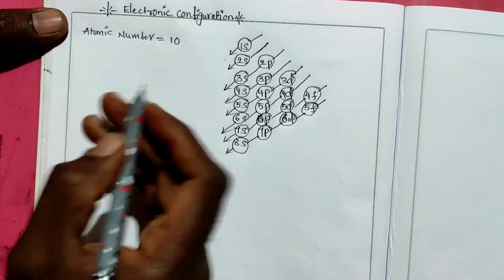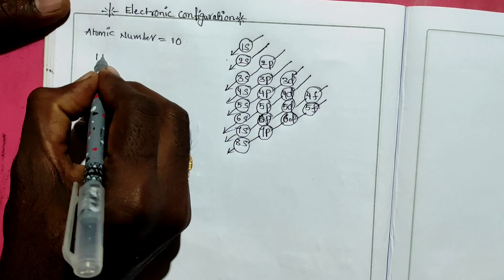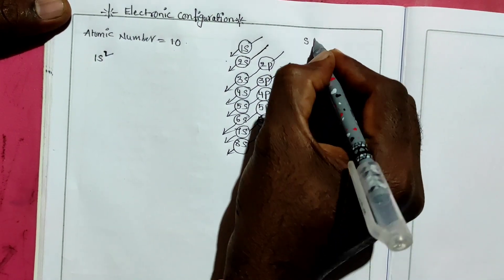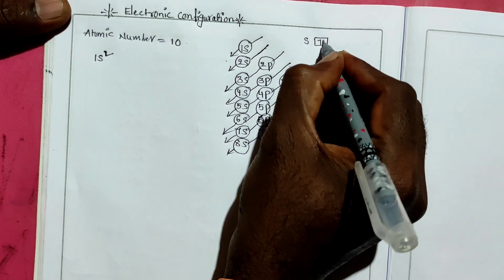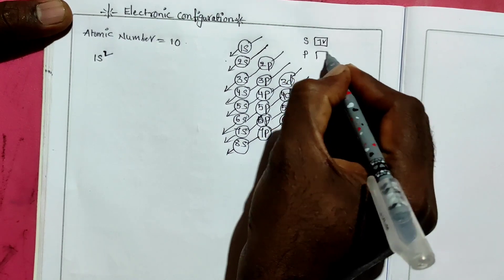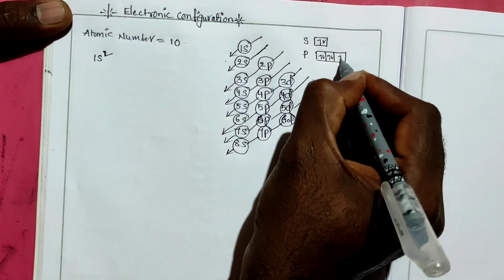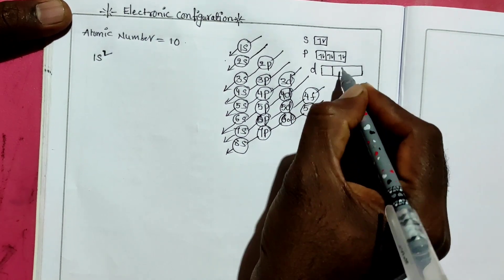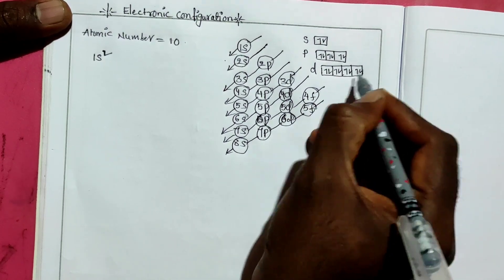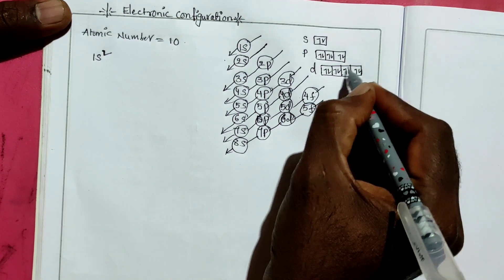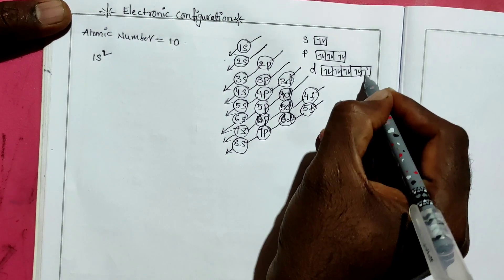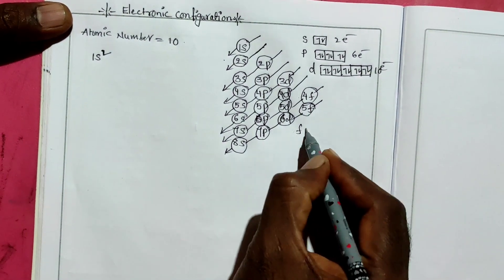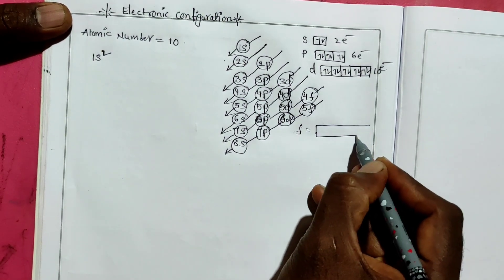For example, atomic number 10 — how do we write electronic configuration? The s orbital can hold only 2 electrons. The p orbital has 3 orbitals, so it accommodates 6 electrons. The d orbital accommodates 10 electrons across 5 orbitals.